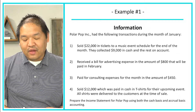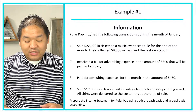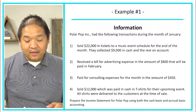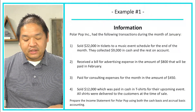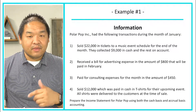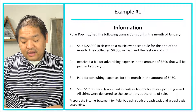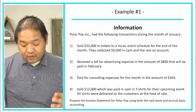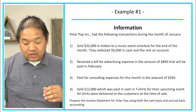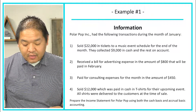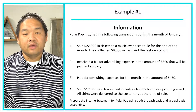Polar Pop Inc. had the following transactions during the month of January. First, they sold $22,000 in tickets to a music event scheduled for the end of the month — they collected $9,000 in cash and the rest on account. Second, they received a bill for advertising expense of $800 to be paid in February. Third, they paid $450 for consulting expenses for the month. Fourth, they sold $12,000 in t-shirts for their upcoming event — paid in cash, and all shirts were delivered at the time of sale. Prepare the income statement using both the cash basis and the accrual basis.